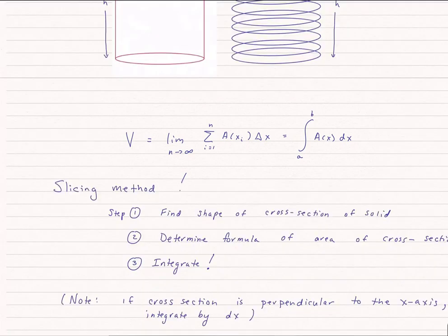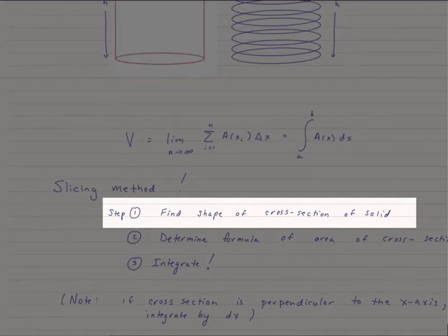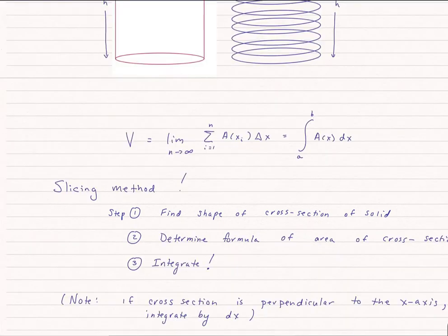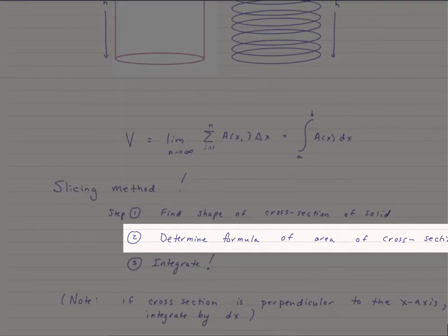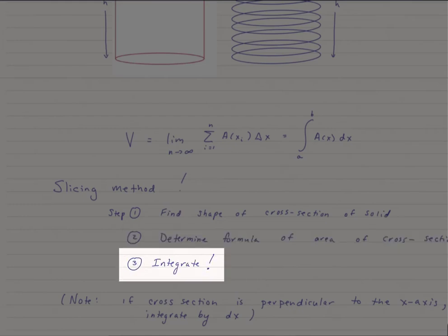So this slicing method, what are the steps? Step one is we have to figure out that cross-sectional shape of the solid. Once we figure out the shape, we're going to determine the formula of that area of that cross-section. And then lastly, we're going to integrate.